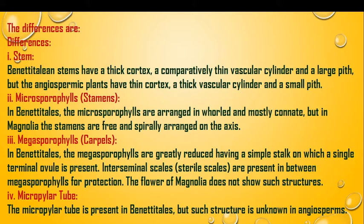Regarding the microsporophylls — that is, stamens — in Bennettitalian members, the microsporophylls are arranged in a whorl and are mostly connate with each other. But in Magnolia, which is an angiospermic plant, stamens are free and spirally arranged on the axis.